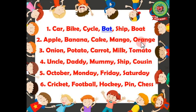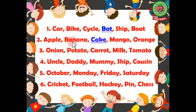Number two: apple, banana, cake, mango, orange. The answer — what is odd here — is 'cake'. Apple, banana, mango, and orange are names of fruits, but cake is a dessert, so it is odd here. We will underline 'cake'.